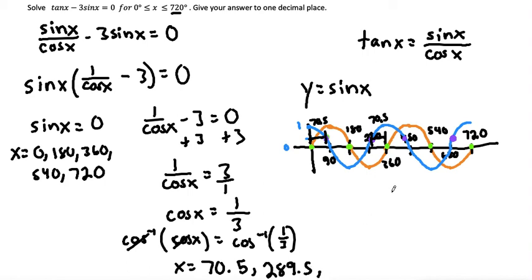And then the next solution we have is here to the right of 360. So we're going past 360 by 70.5. So let's take our 360, and since we're going past, we would add the 70.5. And that gets us to 430.5 would be one more solution there.